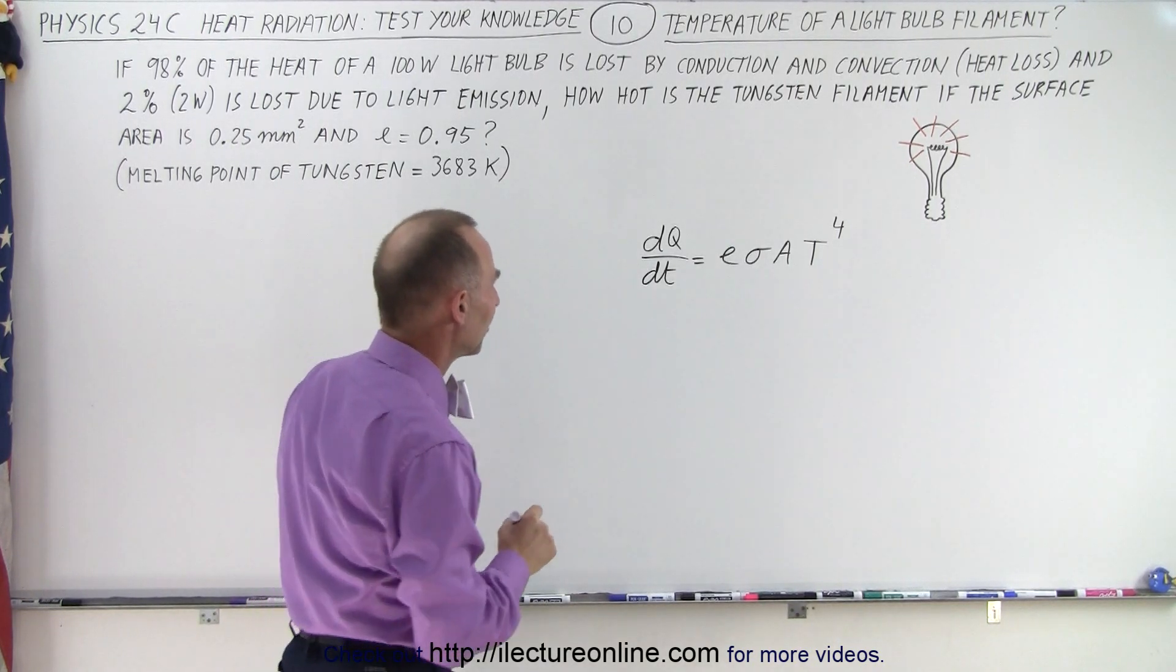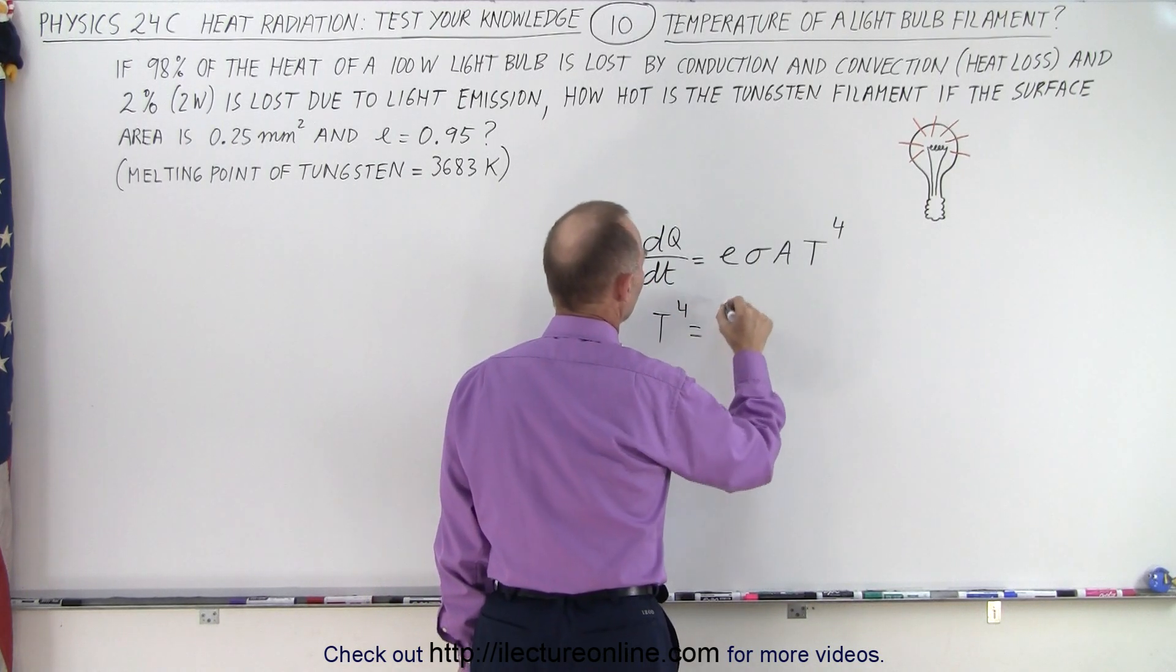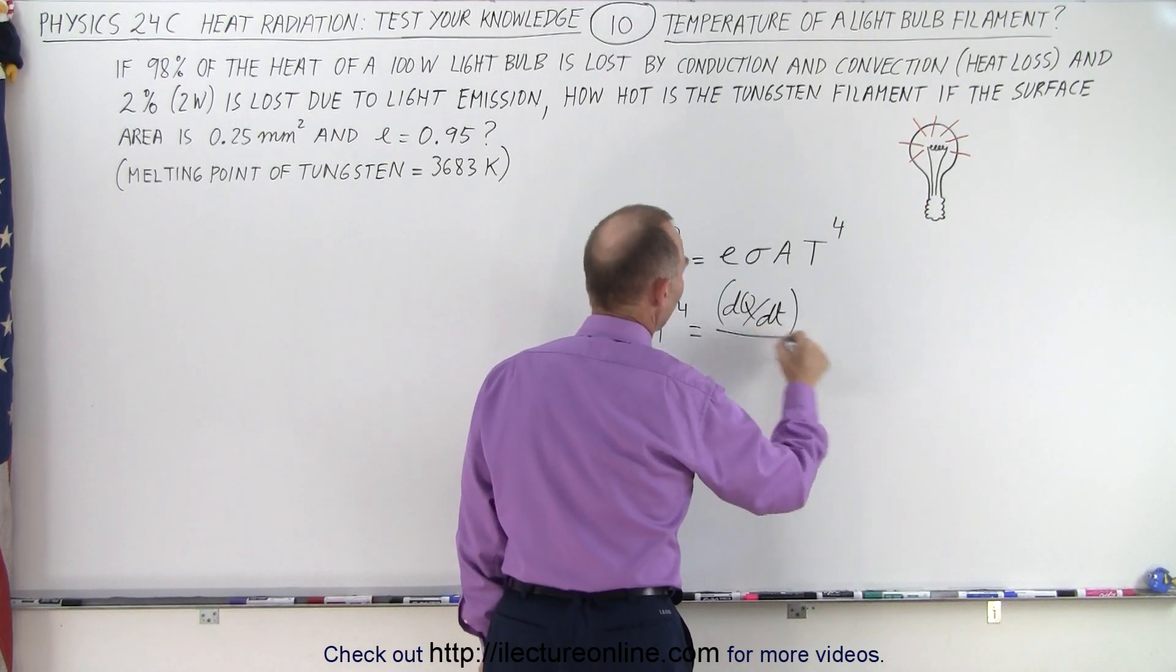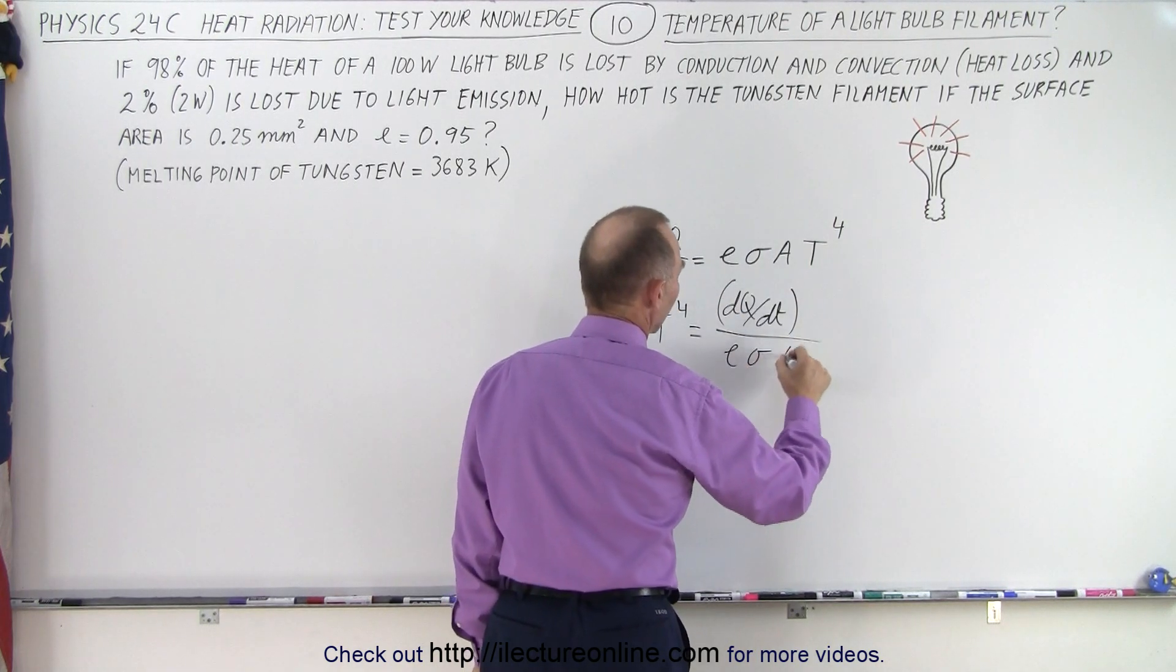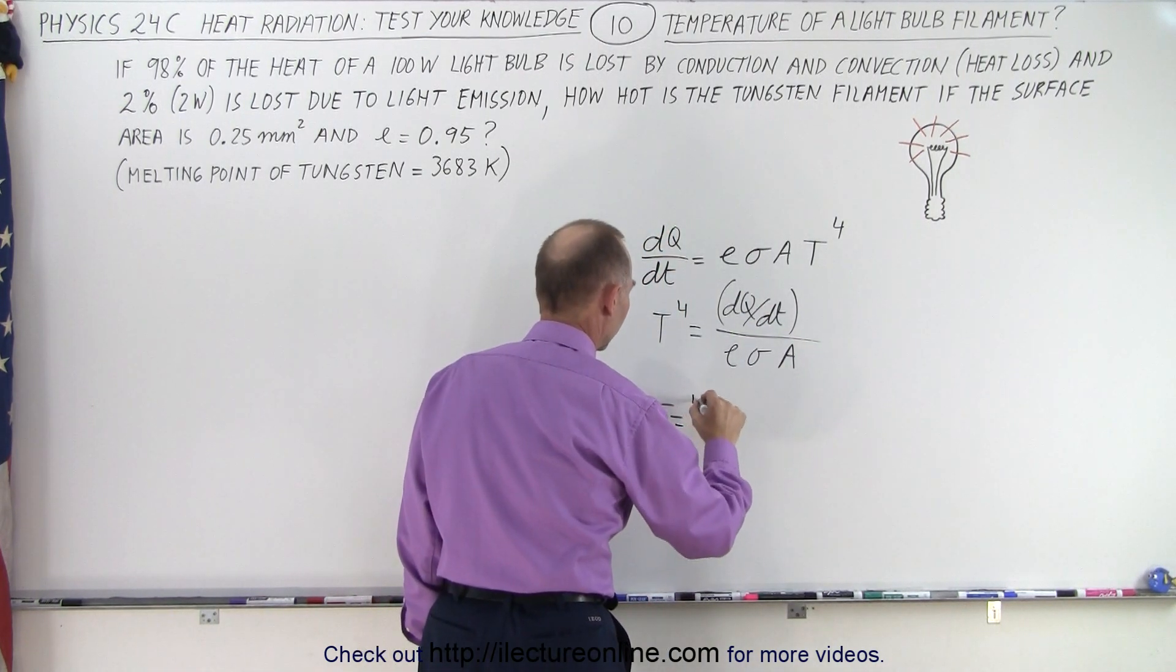So since we're looking for the temperature, we're going to solve this as follows. We're going to say that T⁴ equals dQ/dt divided by ε·σ·A. And all we have to do is take the fourth root of both sides, so temperature equals the fourth root of dQ/dt divided by ε·σ·A.